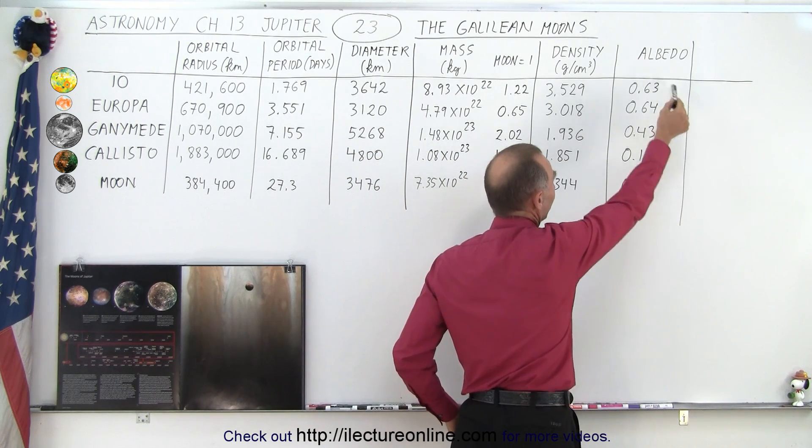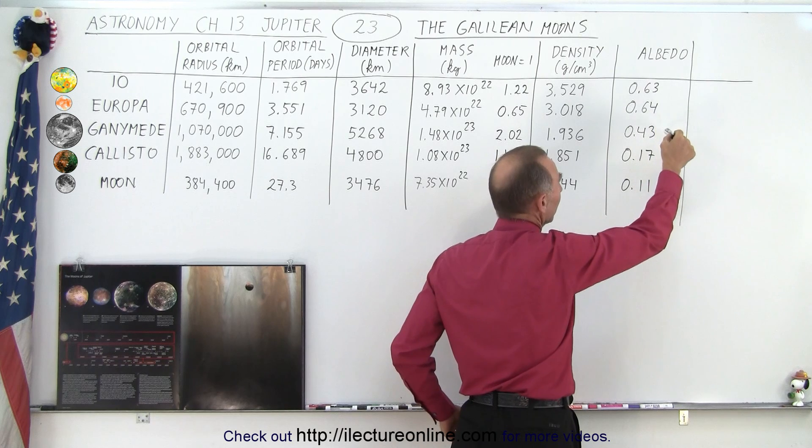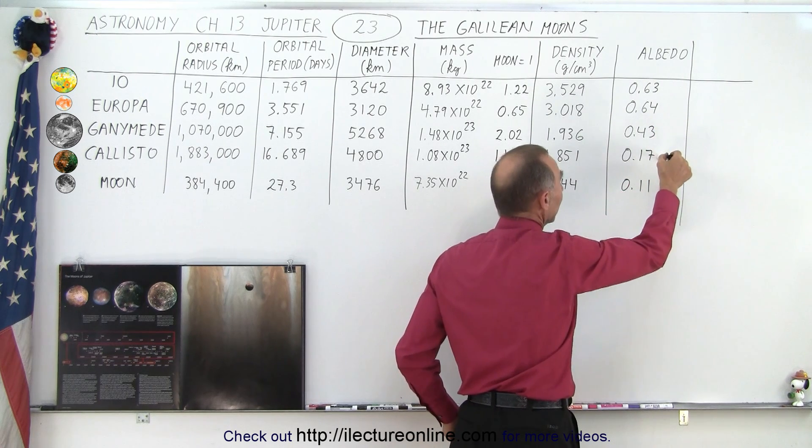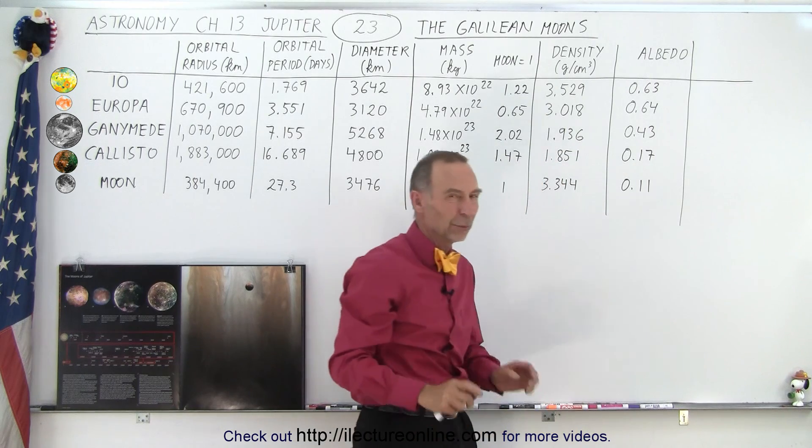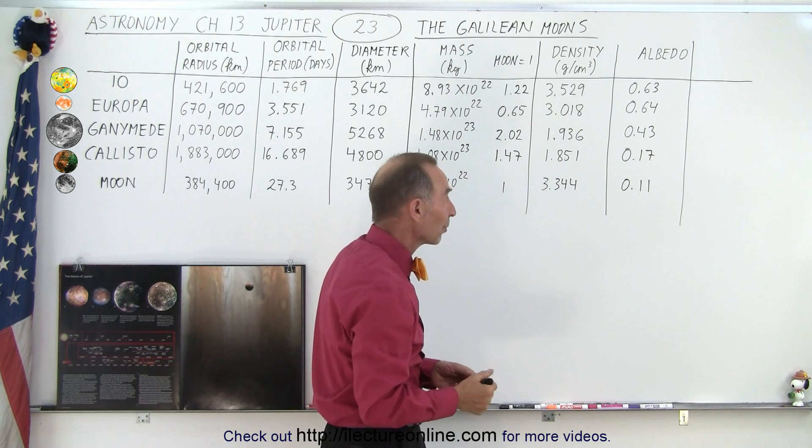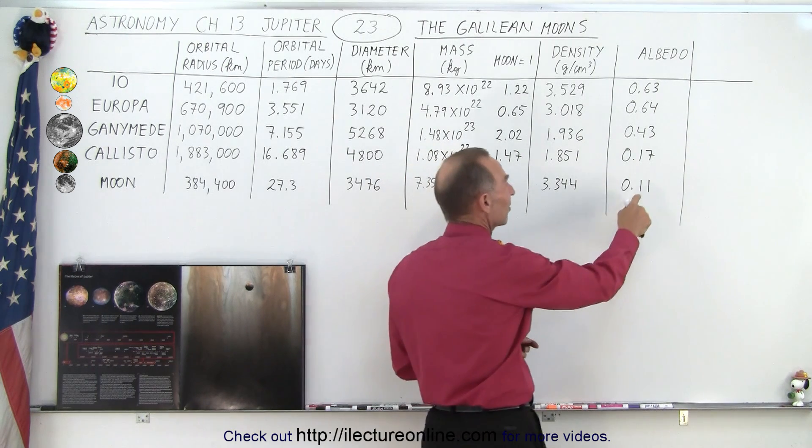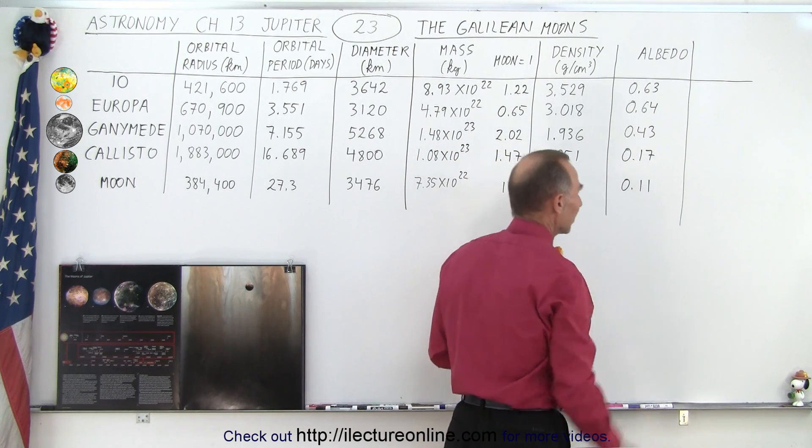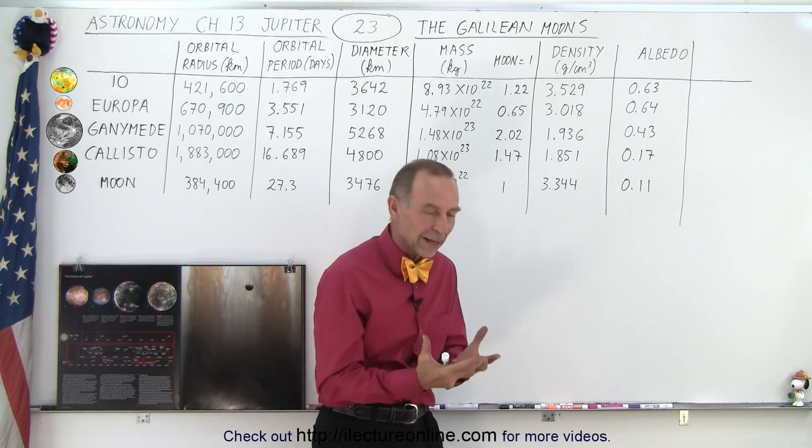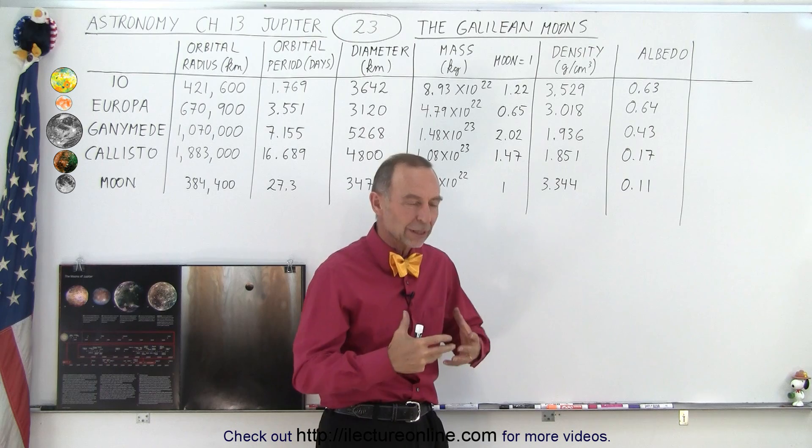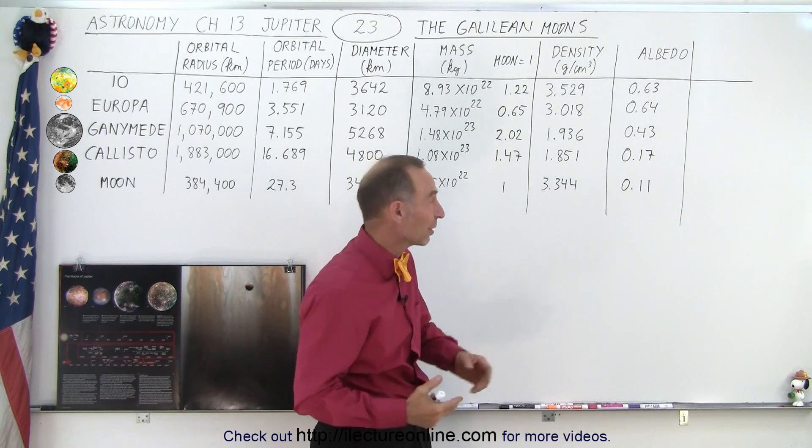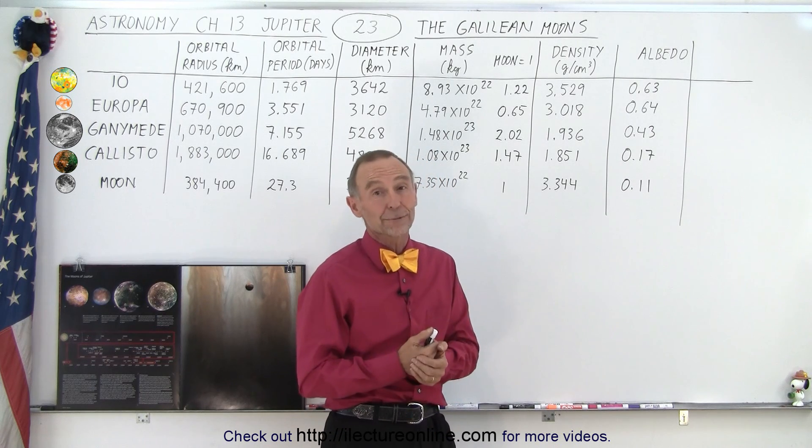You see that 0.63 and 0.64 are very high albedos for two moons. Ganymede is still fairly high but much lower than these two. And notice the albedo of Callisto, which has a lot of dark material in its surface, is much lower. What was surprising was when you compare it to the moon, the moon even has less of an albedo than the four moons of Jupiter. That's because the moon is covered by a material called regolith, and regolith does not reflect light very well. It scatters light but doesn't reflect light very well, and so therefore it has a very low albedo.